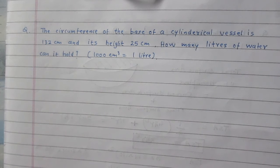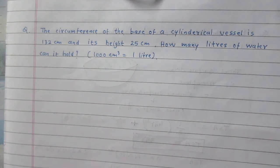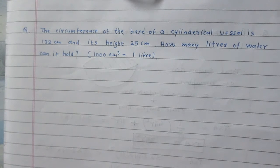The circumference of the base of a cylindrical vessel is 132 cm and its height is 25 cm. How many liters of water can it hold? We are given that 1000 cm³ of volume is equivalent to 1 liter of volume.